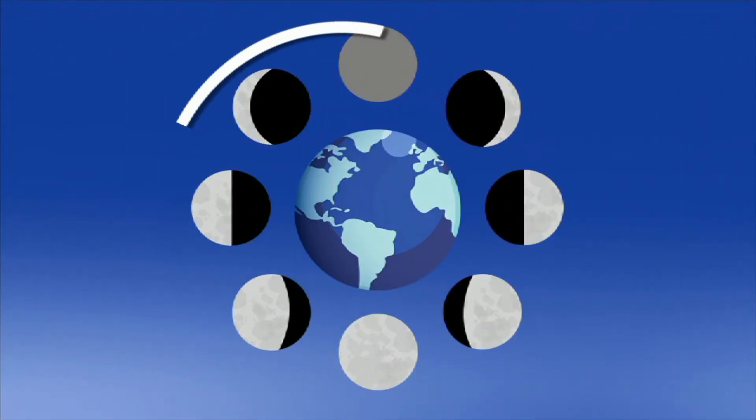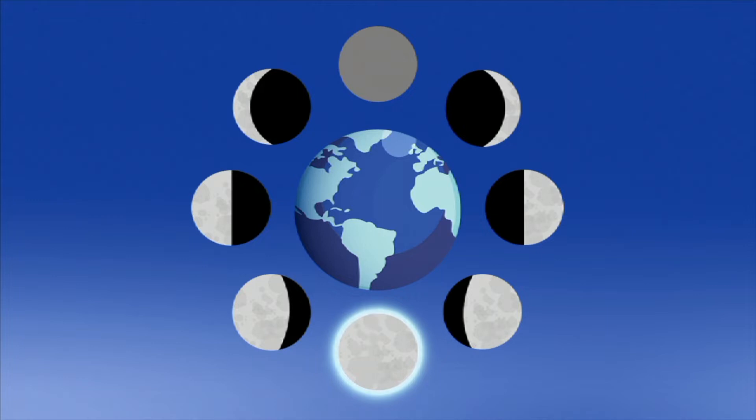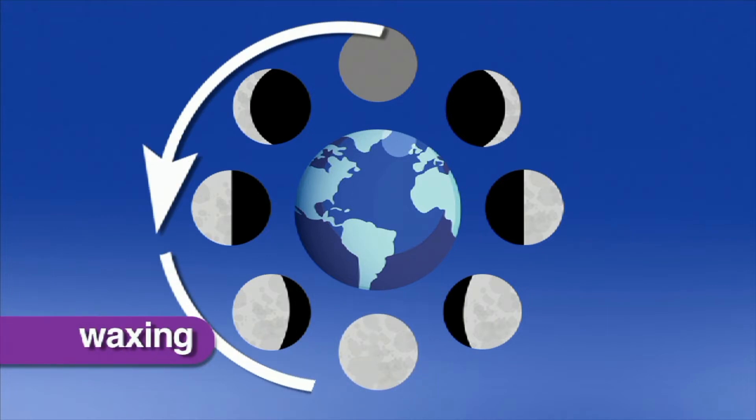As the New Moon begins its orbit, we start to see more and more of the Moon on its way to being a full Moon. This is called waxing. Waxing means increasing or growing larger.